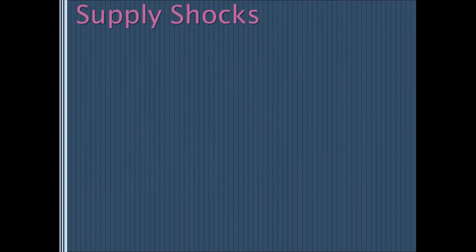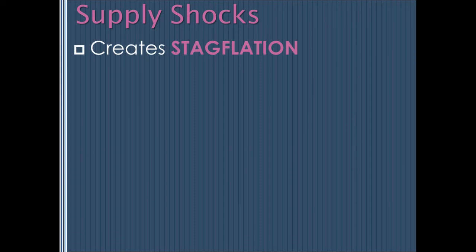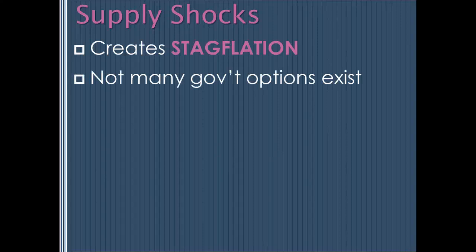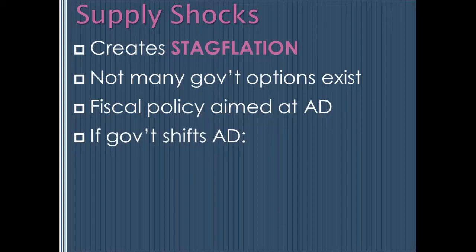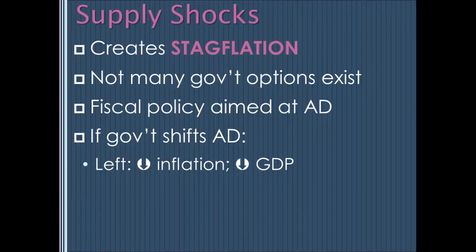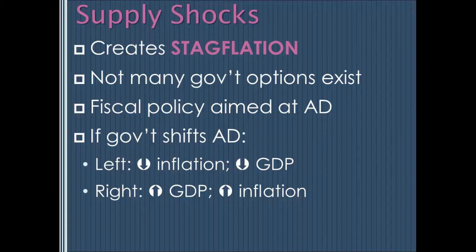The limitation of fiscal policy is that it only works on demand-side issues. Supply shocks create a fiscal policy conundrum that fiscal policy cannot fully fix — we discussed this earlier when talking about stagflation. Negative supply shocks shift short-run aggregate supply left, creating stagflation: a shrinking economy with high prices. Because fiscal policy is aimed at aggregate demand, it can only solve one of the two problems at a time — either deal with inflation at the expense of further reducing output, or boost output at the expense of higher inflation. Either way, the government loses.